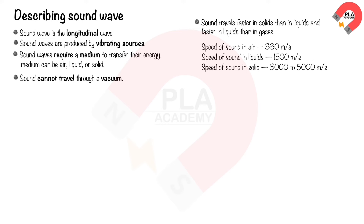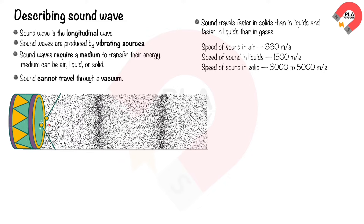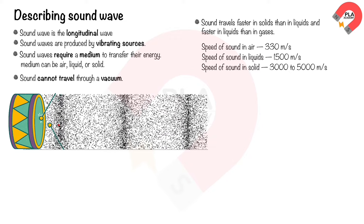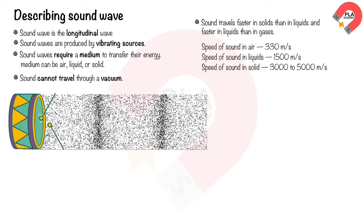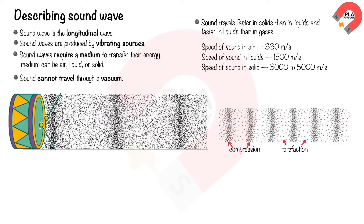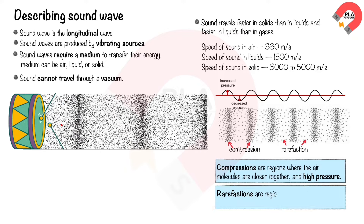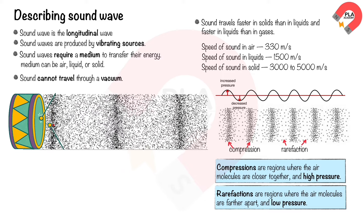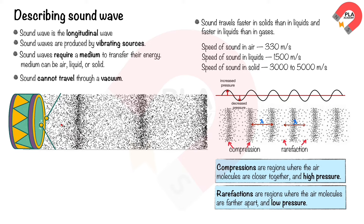The speed of sound in air is approximately 330 m/s; in liquids approximately 1,500 m/s; and in solids approximately 1,500 to 3,000 m/s. When you bang a drum, the skin vibrates, causing nearby air molecules to vibrate by bumping into each other, creating a series of compressions and rarefactions. Compressions are where molecules are closer together at high pressure; rarefactions are where they are farther apart at low pressure. The distance between consecutive compressions or rarefactions is the wavelength.